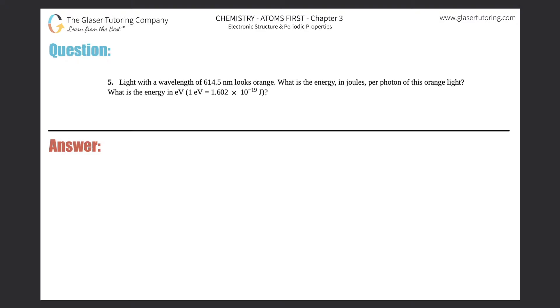Number five: Light with a wavelength of 614.5 nanometers looks orange. What is the energy in joules per photon of this orange light? What is the energy in eV? One eV equals 1.602 times 10 to the negative 19 joules.